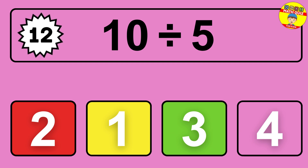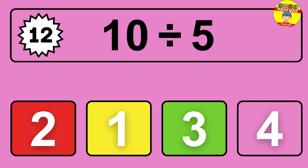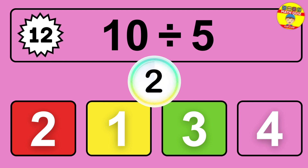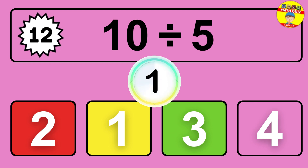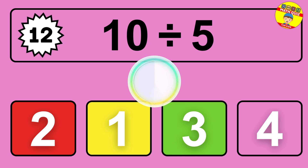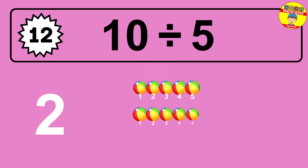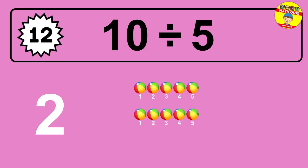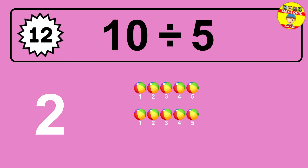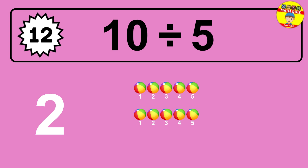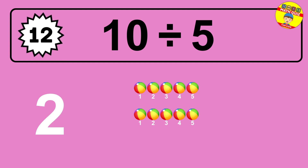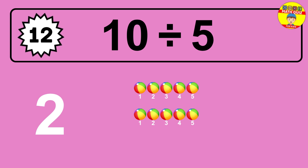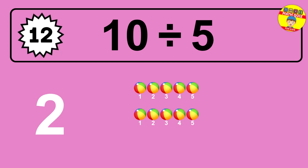What is 10 divided by 5? Picture this: you have 10 objects to divide into groups of 5. How many groups can you make? Let's think about it. Ready to find out? Let's break it down. Let's imagine you have 10 objects. Can you picture them lined up? Now think about splitting them equally into smaller groups of 5.